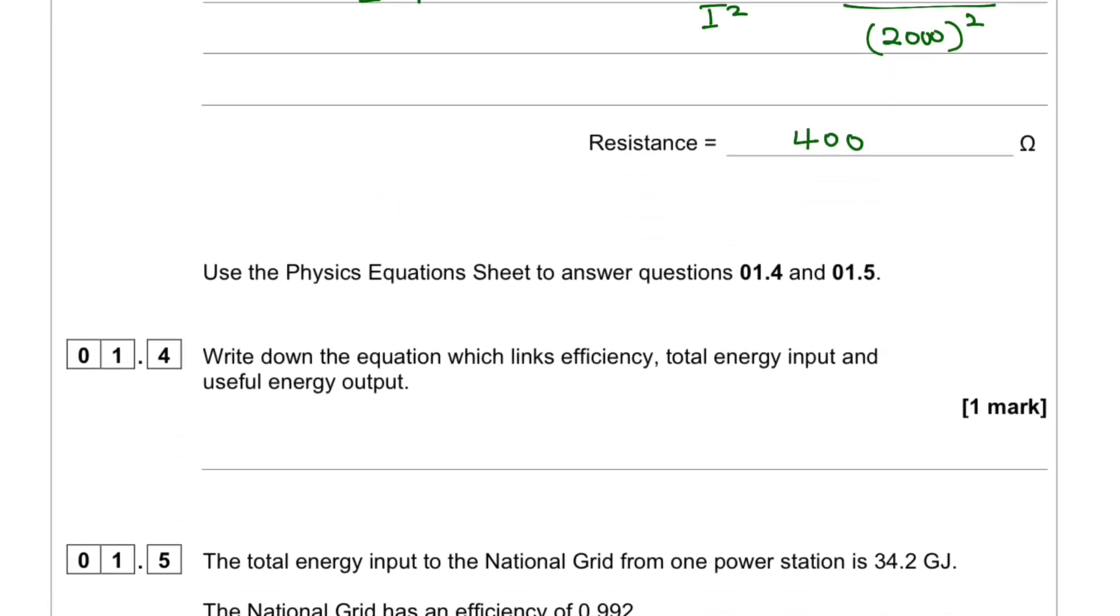Question 1.4. We need to write down the equation which links efficiency, total energy input and useful energy output. So we know that the efficiency will be equal to useful energy output over total energy input.